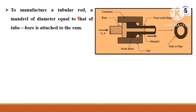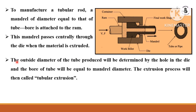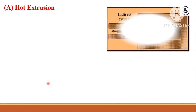To manufacture a tubular rod, a mandrel with a diameter equal to the tube bore is attached to the ram. This mandrel passes centrally through the die when the material is extruded. Without a mandrel, a solid rod is formed. With a mandrel, a hollow tube or pipe is produced. The outer diameter of the tube is determined by the hole in the die, and the bore of the tube equals the mandrel diameter. This is called the tubular extrusion process.